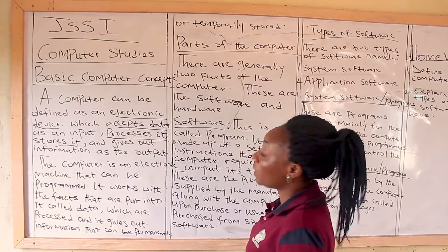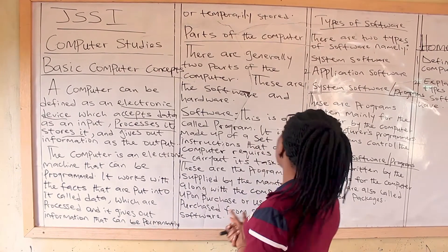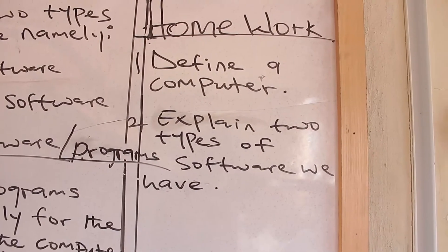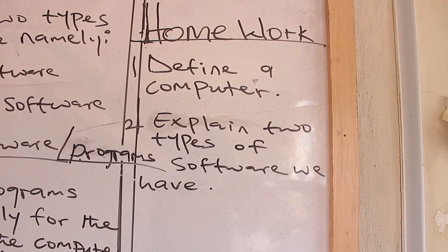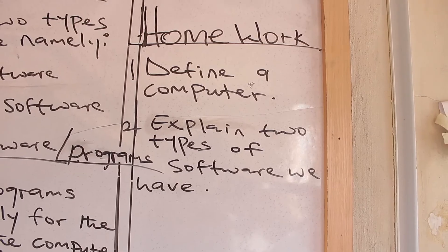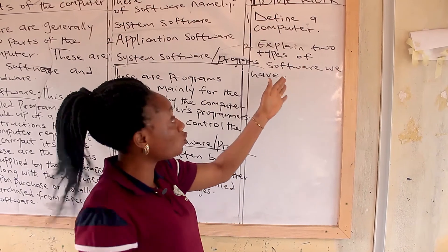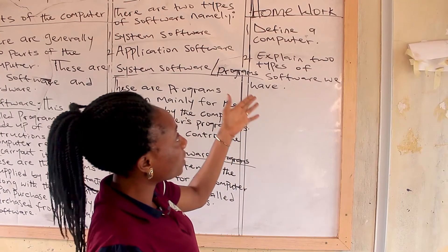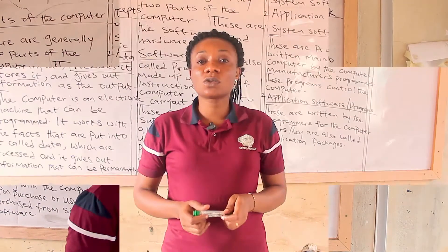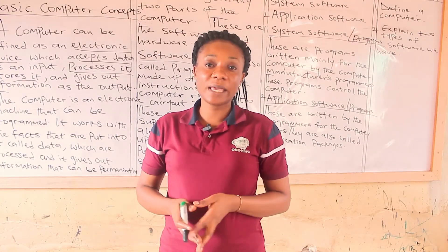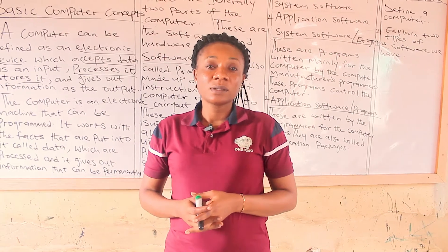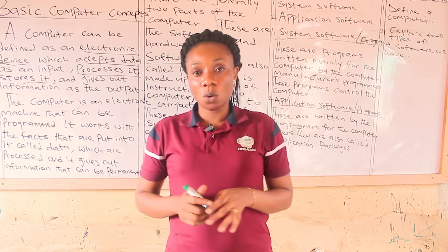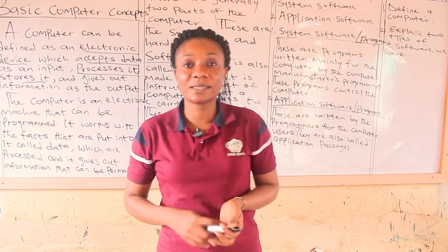We've come to the end of today's lesson. I have homework for you. Number one: define a computer just like I taught you. Number two: explain the types of software we have — list and explain the two types of software. Students, we've come to the end of today's e-learning program. Thank you and God bless you. Please remember to do your homework. See you next time. Bye.